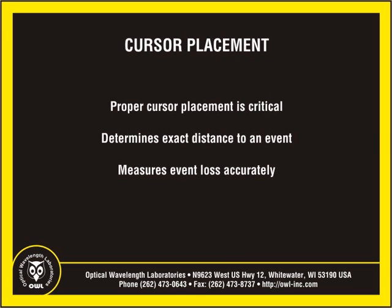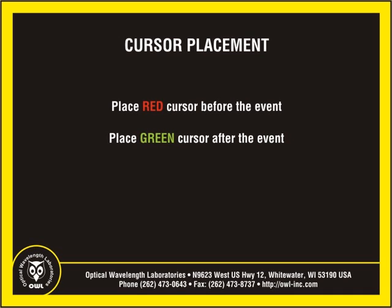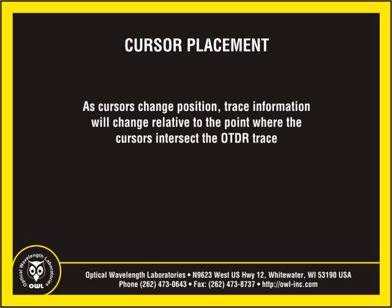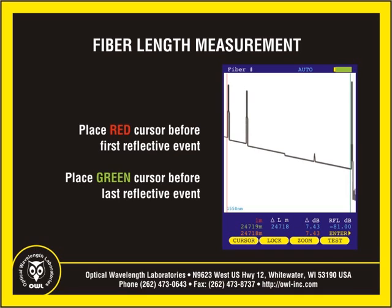Proper cursor placement is critical in determining the exact distance to an event, as well as the relative effects the event has on the optical power traveling through it. In general, when placing cursors, the red cursor should be placed before the event and the green cursor should be placed after the event. The trace information will change to indicate the distance and relative power in dB at the point where each cursor intersects the OTDR trace. By placing cursors at the beginning and ending points of the trace, the distance between the cursors will show a close approximation of the total length of the optical fiber link, as well as the total fiber link loss. The red cursor should be placed before the first reflective event and the green cursor before the last reflective event, each at a point where the line begins to spike.